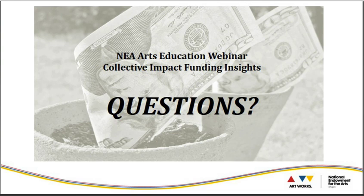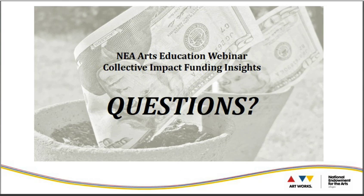Here's another question: can a state agency apply for a collective impact grant supporting arts education? It's a matter of eligibility. State arts agencies can't apply to the Grants for Arts Projects category, but they can certainly be a partner. And another question: can you talk a little bit more about the types of data that are being collected to support this work?